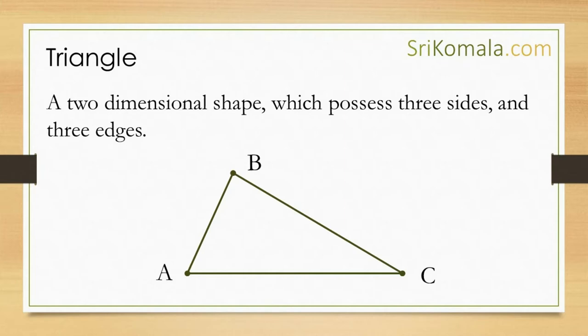This triangle is called triangle A B C. It has three edges, which are point A, point B, and point C.